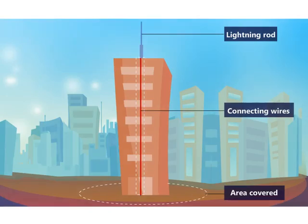You must have observed metallic pointed rods on the rooftops of tall buildings and wondered what they are. These are called lightning conductors and prevent any damage due to lightning. The metal rods are made of copper and are buried in the ground. When lightning strikes the building, the charges freely flow directly to the ground and not through the building, preventing any damage.